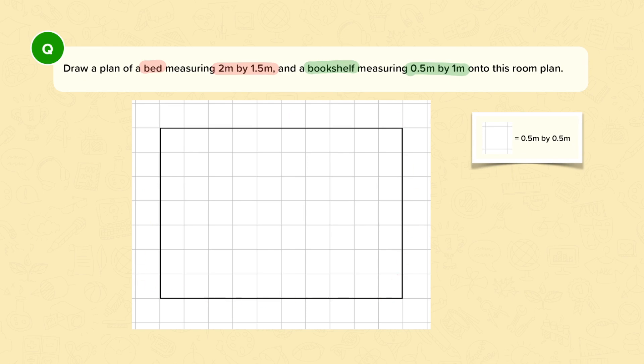Now this time I have a different scale, so I'm told that 1 square represents 0.5 meters by 0.5 meters. So if I have a bed to draw that is 2 meters by 1.5 meters, I need to figure out how many squares that is on the plan.